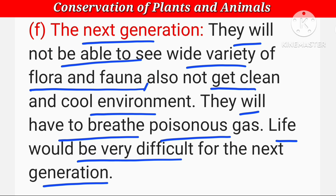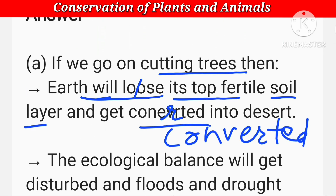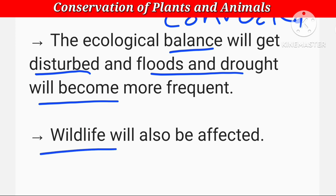If we go on cutting trees, earth will lose its top fertile soil layer — धरती से ऊपर की fertile soil की layer खत्म हो जाएगी, and get converted into desert — और वो रेगिस्तान में बदल जाएगी। The ecological balance will get disturbed and floods and drought will become more frequent — flood और drought और जल्दी-जल्दी आने लगेंगे। Wildlife will also be affected — जो wildlife है वो भी प्रभावित होगी।